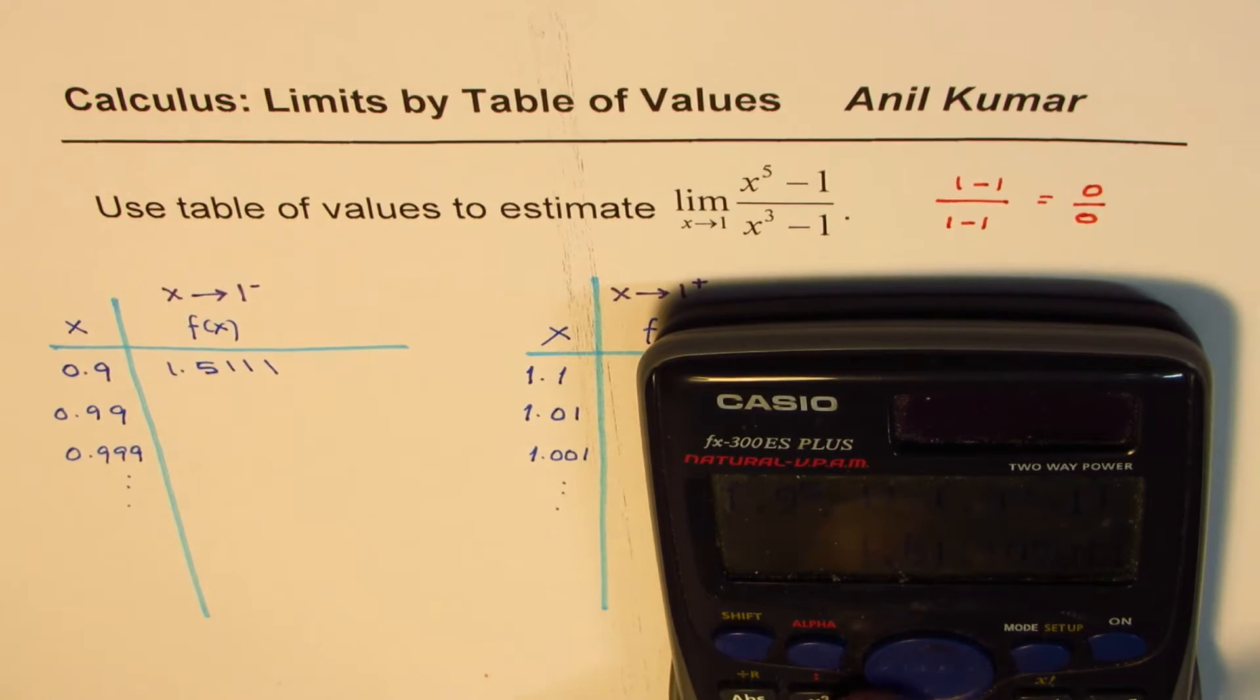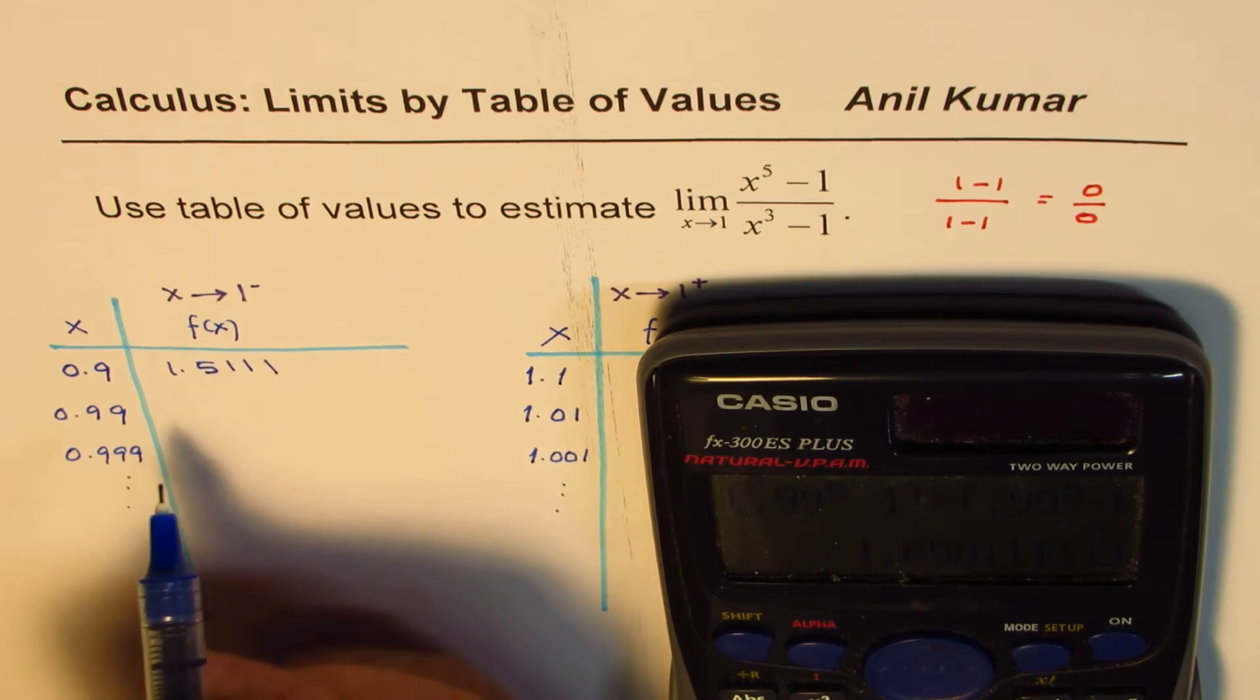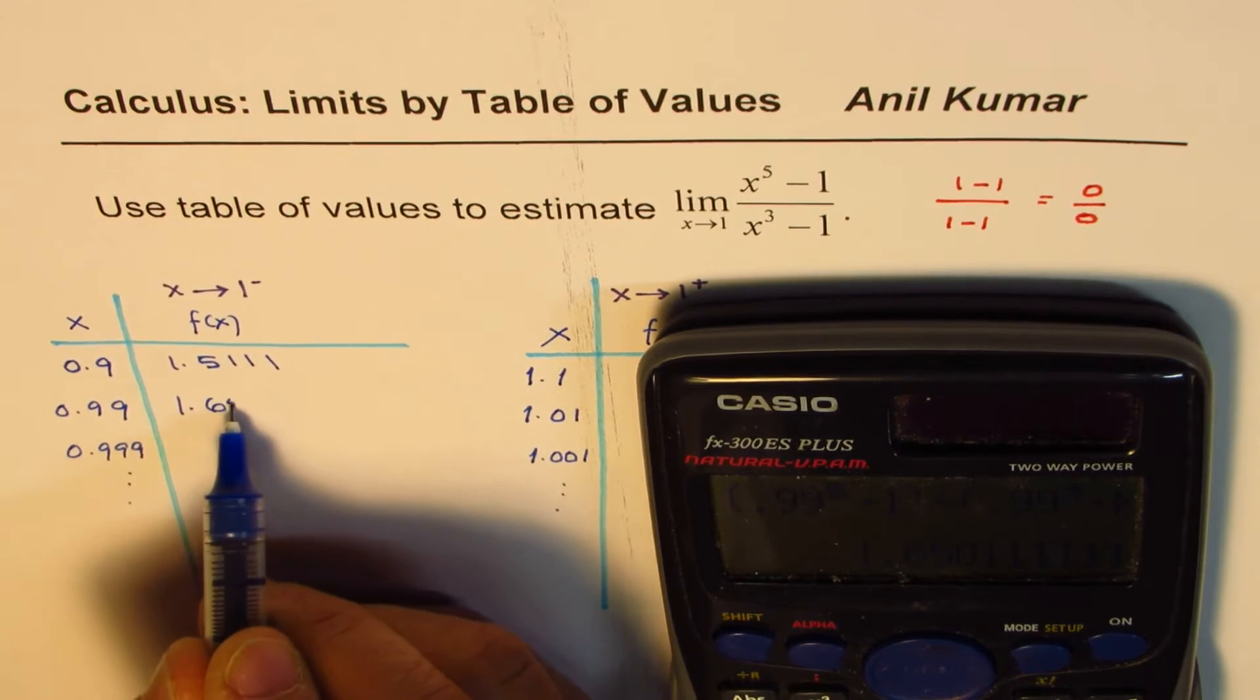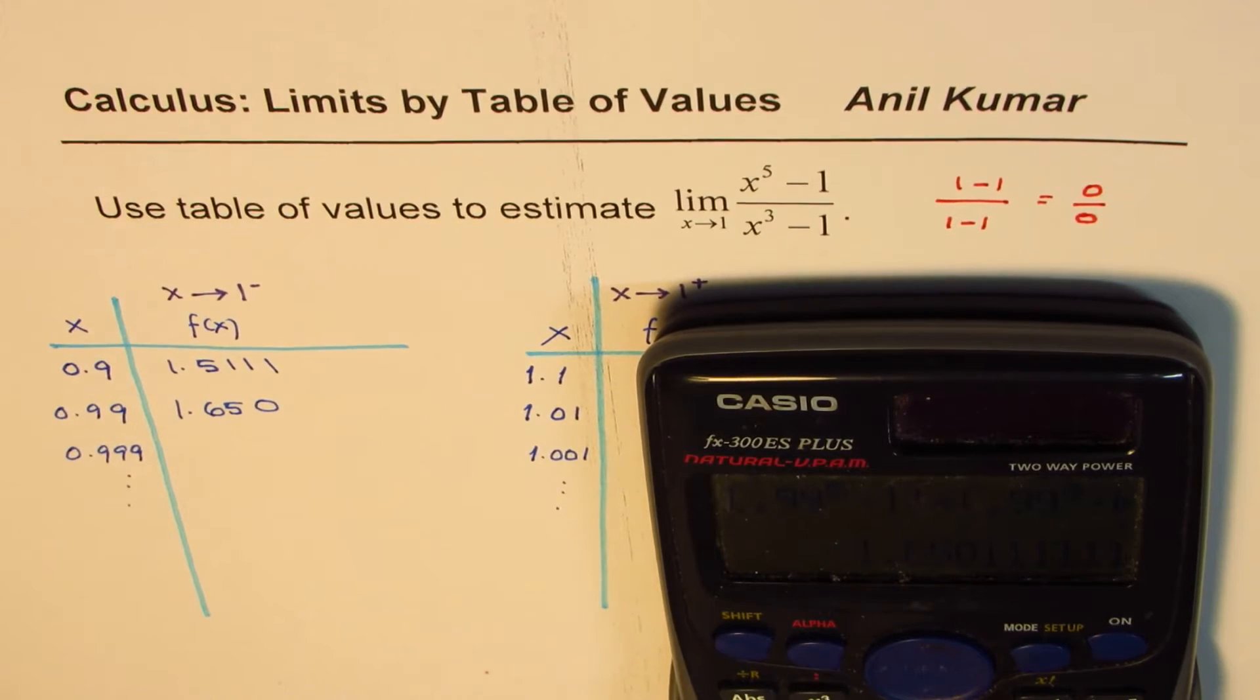Now we're going to replace this 0.9 with 0.99. So that makes this closer to 1 from the left side. So now we have written this as 0.99 and equal to, so we get a value 1.650.